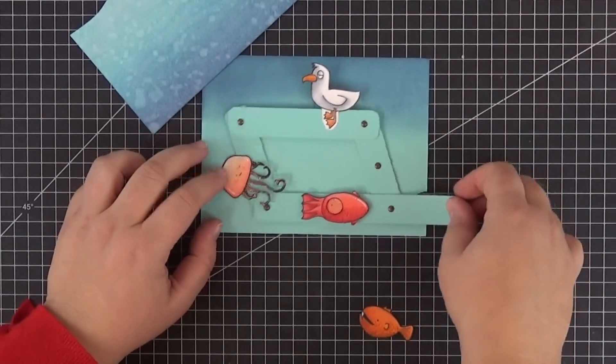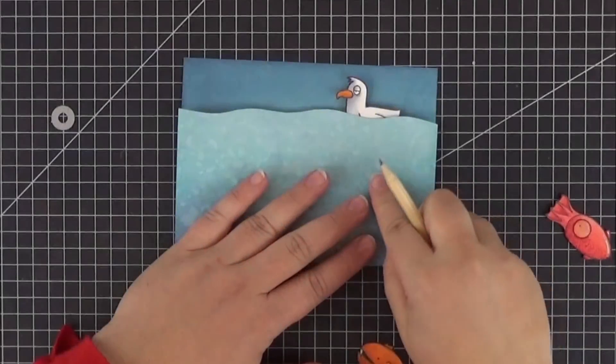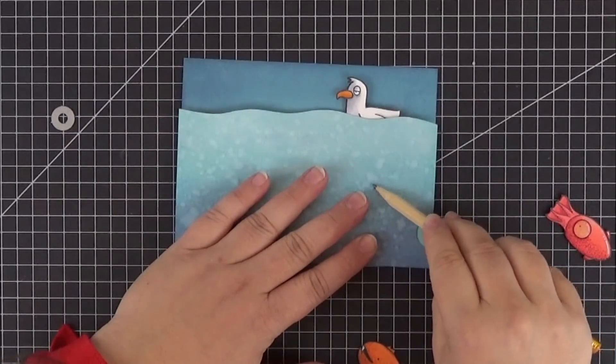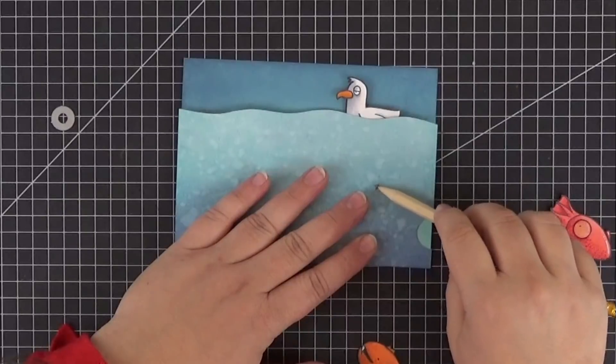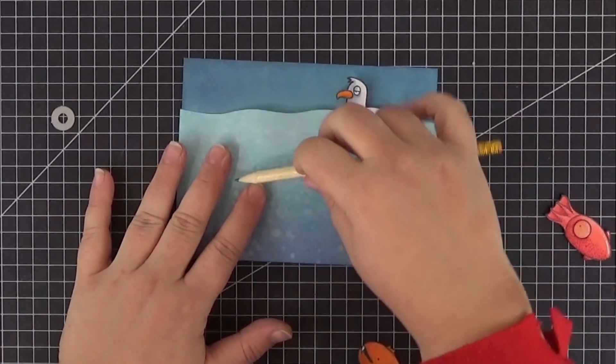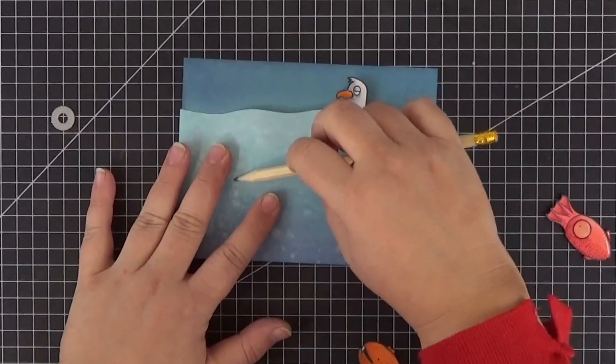There, a lot better. To make the jellyfish and the anglerfish rotate, we need to cut some holes in our water panel. You just press down with your finger on top of the rotating brads and use a pencil to mark the two spots.